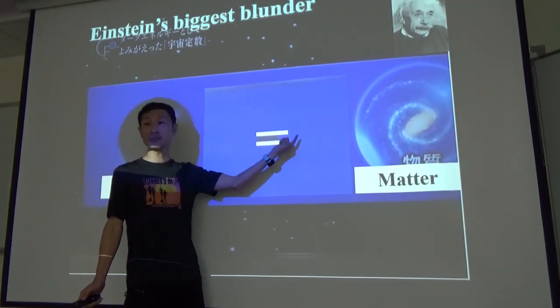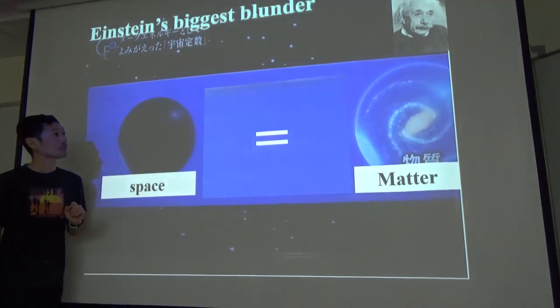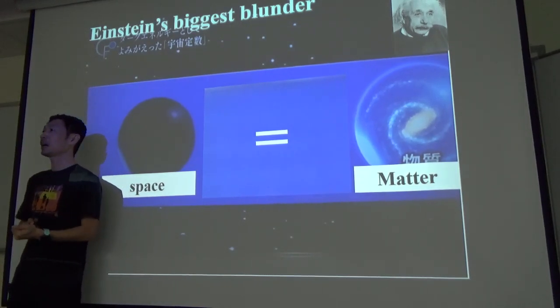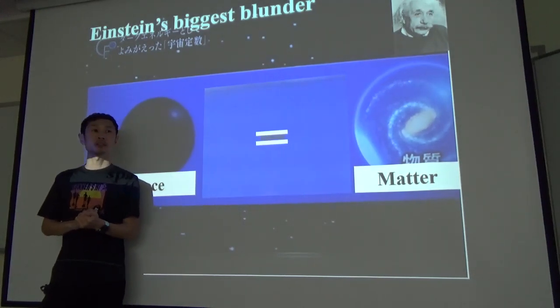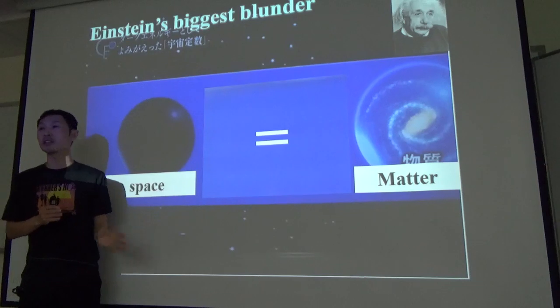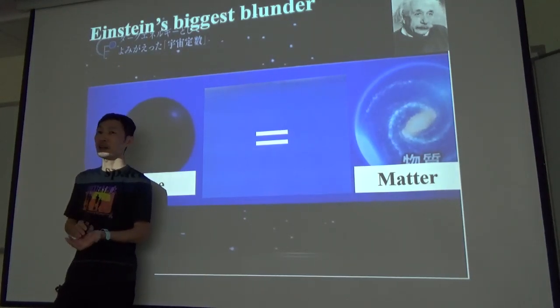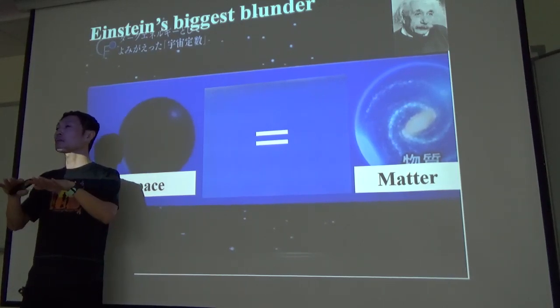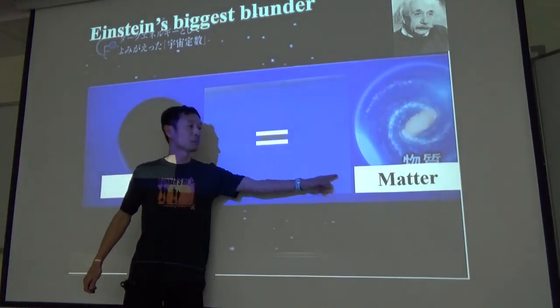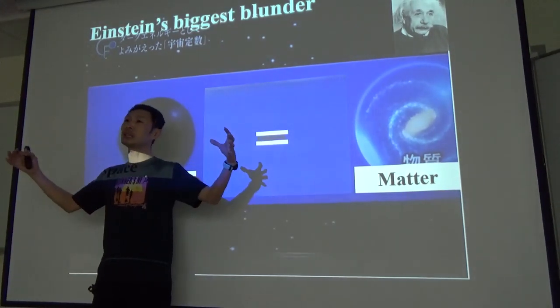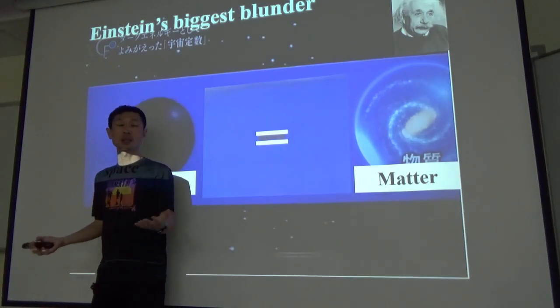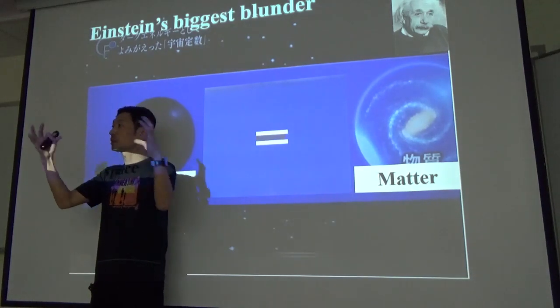Matter tells space how to curve and then space tells matter how to move. These two are equal, that's Einstein's equation. When Einstein came with this Einstein's equation and he applied it to the universe, the universe cannot be static. At that time Einstein came with this general relativity in 1915. At that time people still believed the universe is static, not expanding or contracting. But if you look at this Einstein's equation, the matter mostly is causing gravity. Gravity is a force to pull each other, a pulling force. So if you apply this equation to the whole universe, the matter in the universe can pull down the universe and make it shrink.